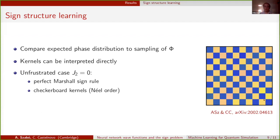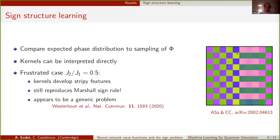If we look at the kernels, they all essentially look the same as this one. They have a very distinct checkerboard pattern that we can show is reproducing the Marshall sign rule that is consistent with the Néel order.